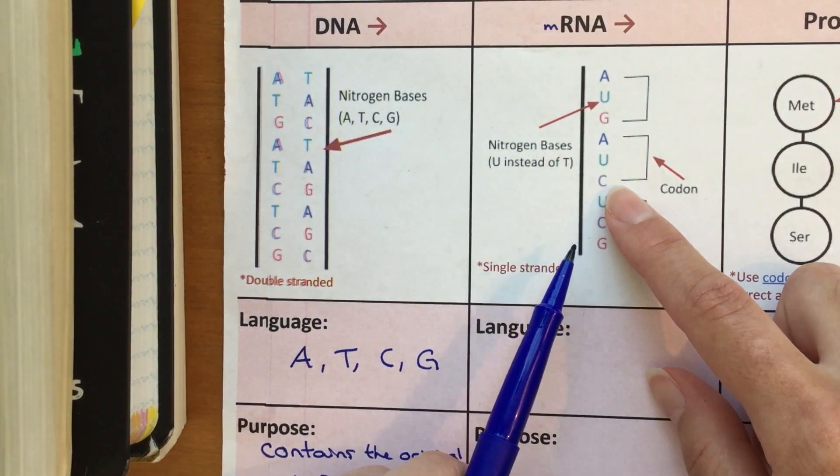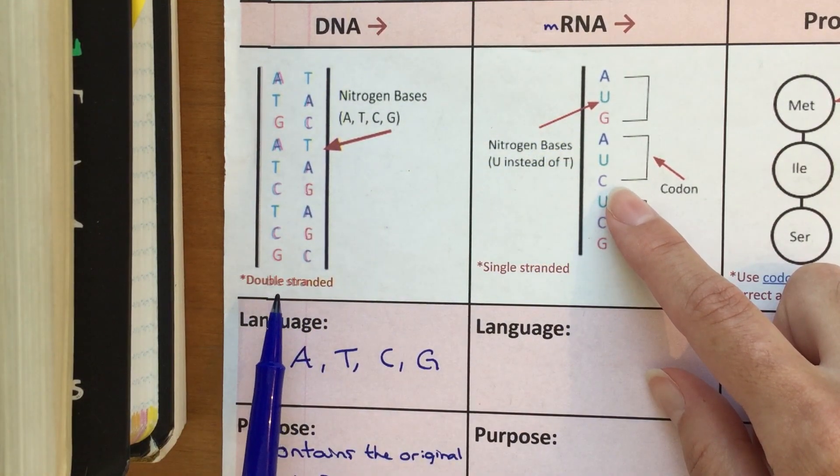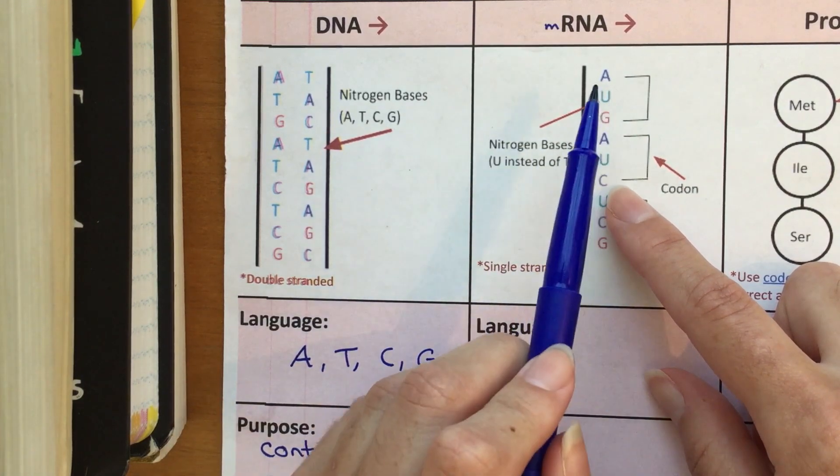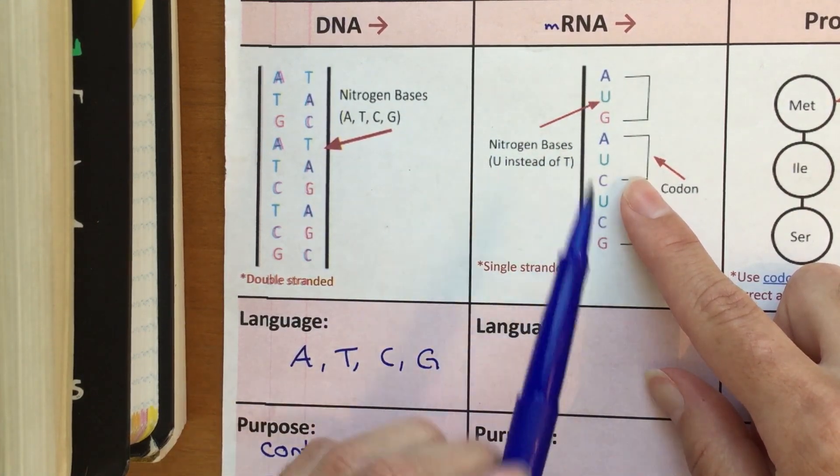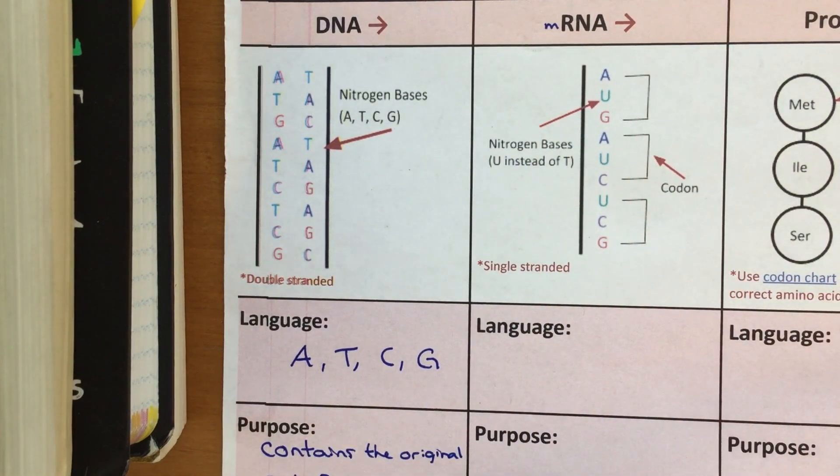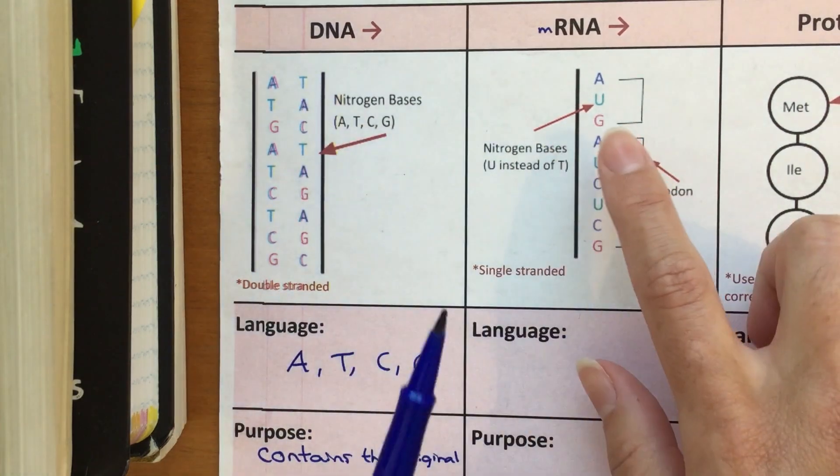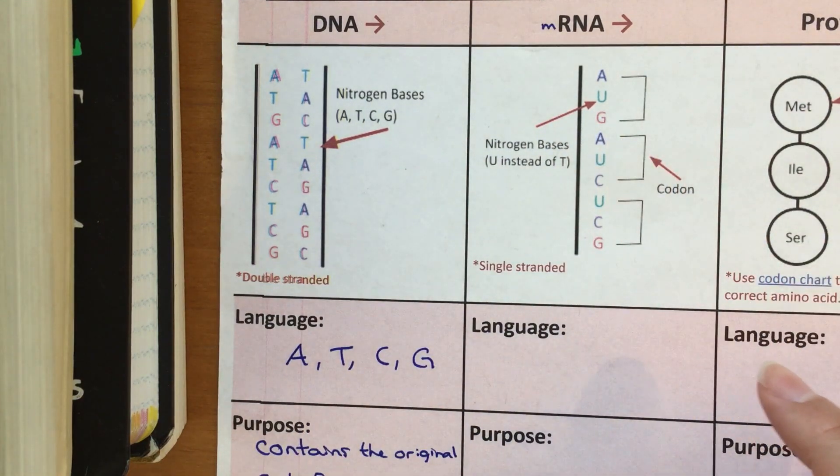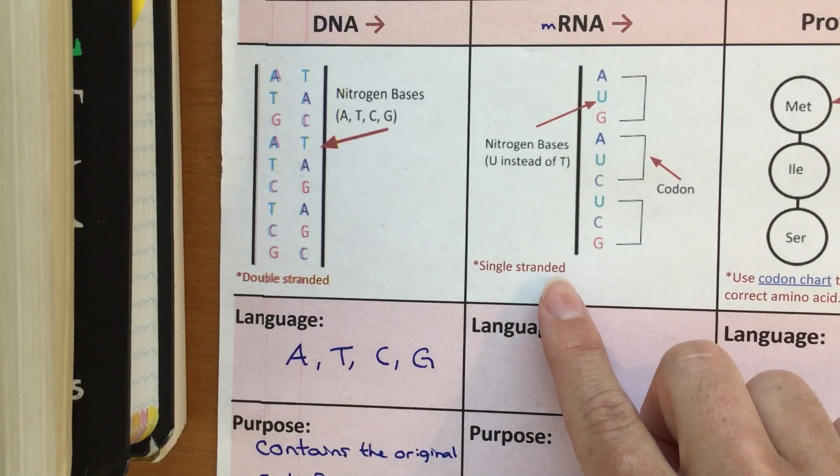RNA is single-stranded, so it's going to look very similar to DNA, but you're only going to have one strand of nucleotides. The nitrogen bases all remain the same with one exception. U stands for uracil and there's no thymine in RNA. So while you'll see T's in DNA, you're going to only see U's for uracil in RNA strands. And as I mentioned, it's also single-stranded.